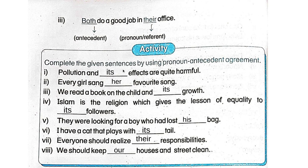Activity: Complete the given sentences by using pronoun-antecedent agreement. Pollution and its effects are quite harmful. Every girl sang her favorite song. We read a book on the child and its growth — child is the antecedent and its is the pronoun or referent. Islam is the religion which gives the lesson of equality to its followers. Islam is the antecedent and its is the pronoun or referent.